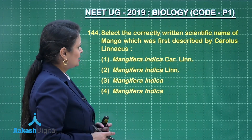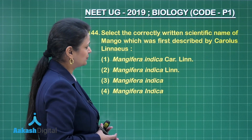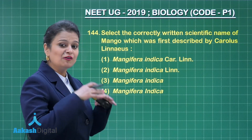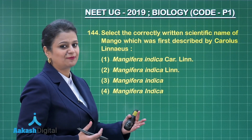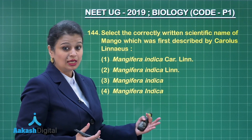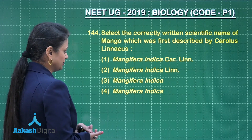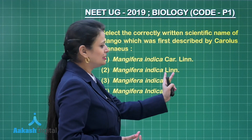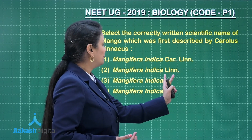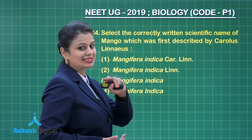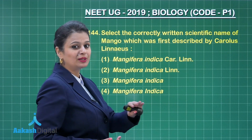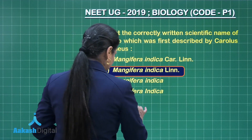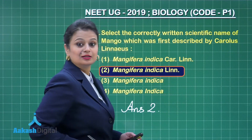Next question: select the correctly written scientific name of mango, first described by Carolus Linnaeus. According to Carolus Linnaeus, in a scientific name the first word is the genus, the second is the specific epithet, followed by the author's name in abbreviated form. The second option shows genus name Mangifera, specific epithet indica, and the author name Linnaeus in abbreviated form, which is never italicized, never underlined when handwritten, and written in normal style. The right answer is option number two.